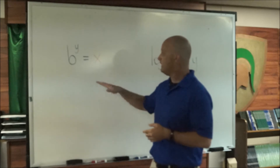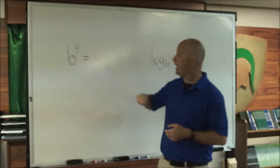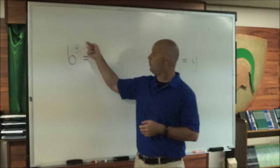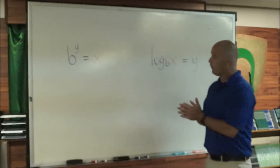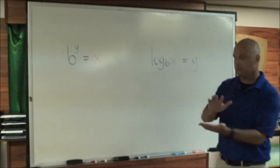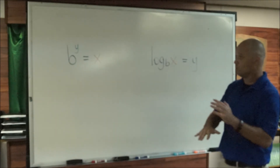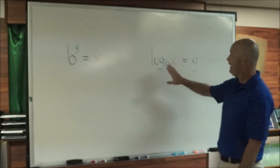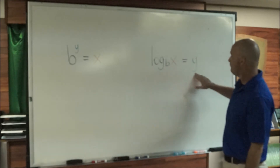Let's say this is 3 squared, so 3 squared would equal 9. So b would be 3, y would be 2, and x would be 9. What we're going to do is just take those numbers or letters or whatever we've got there, and that's going to go into this form here.